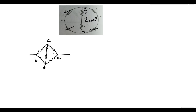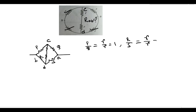This is the figure of a Wheatstone bridge. If this is P, this is Q, this is R, and this is S, then P by Q equals R by S — that is 1 equals 1, and R by S equals small r by R, which is 1. So P by Q equals R by S: the Wheatstone bridge is in the balance condition.